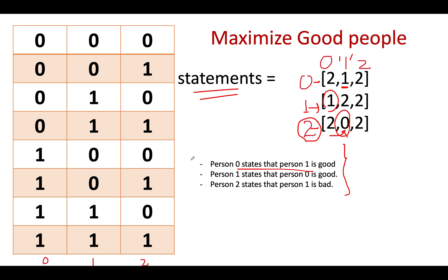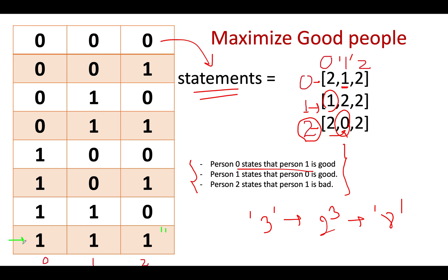We have extracted all these conditions. Now we will iterate through all the possibilities that could exist. Since the total number of people in the first example is 3, we can have at most 2³ = 8 possibilities. We'll assume each person to be either a good person or a bad person, and I have listed down all such possibilities. Here 0 represents a bad person and 1 represents a good person. We will validate each possibility against the set of statements and check whether they hold true.